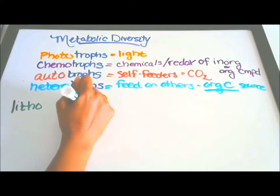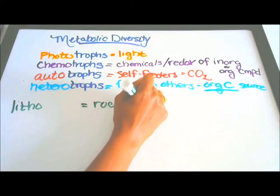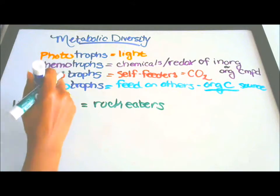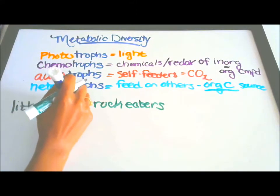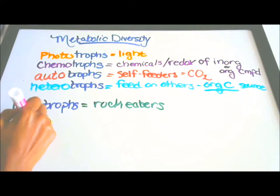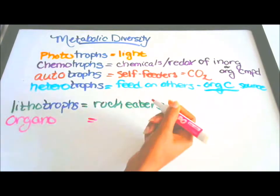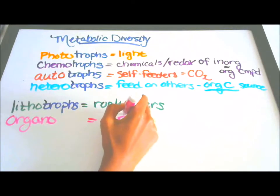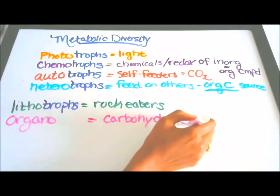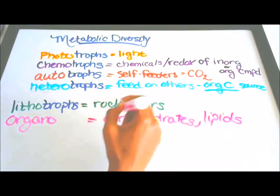Lithotrophes are rock eaters. Organotrophes feed off of carbohydrates, lipids, and proteins.